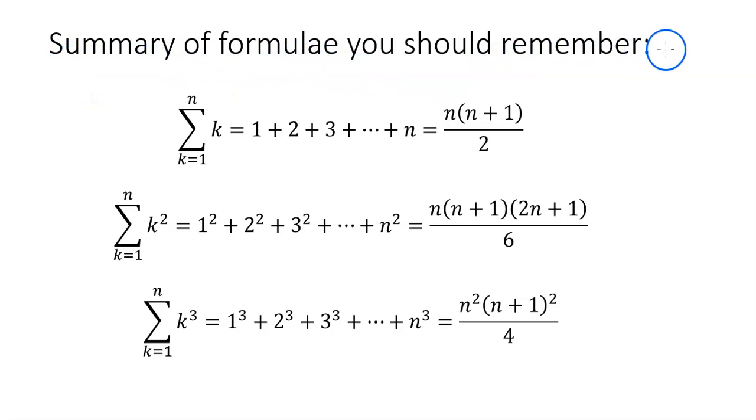Summary of formulae you should remember. So we have the sum from k equals 1 to n of k, and we figured out that's equal to n times n plus 1 divided by 2.